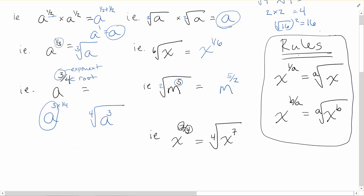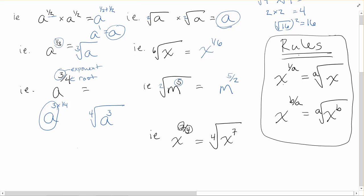These two forms are equivalent — you can write it as a fractional exponent or with the root symbol, either way works. Be aware that roots are also called radicals. To recap: the bottom of the fractional exponent gives the order of the root, and if there's a number other than one on top, that becomes the exponent on the variable inside the root.